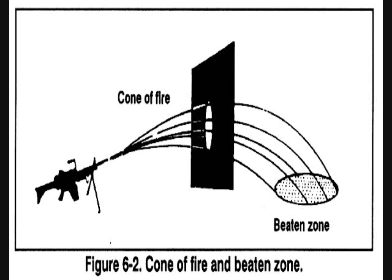D — the beaten zone. This is the elliptical pattern formed by bullets striking the ground or the target. The size and shape varies when the range to the target changes or when the weapon is fired on different types of terrain. On uniformly sloping or level terrain, the beaten zone is long and narrow. As range increases, it becomes shorter and wider. On terrain sloping away from the weapon it becomes longer; on rising terrain it becomes shorter. The width of the beaten zone is not affected by terrain — it remains constant.